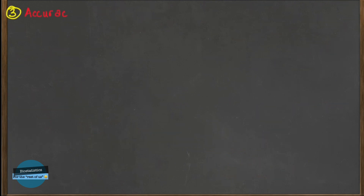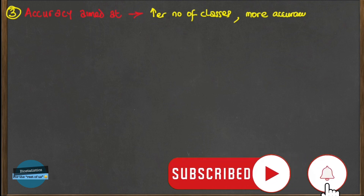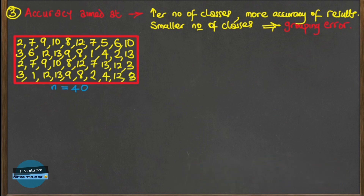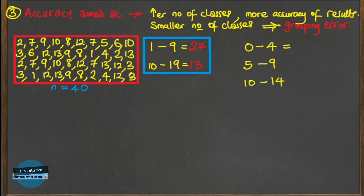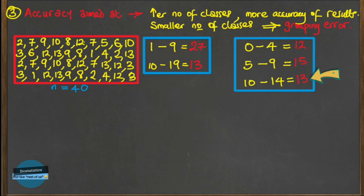The third factor is the accuracy you are aiming for in your results. Generally, as the number of classes increases, the accuracy of the results improves, at least to a certain extent. Consider data from 14 individuals grouped first into two groups and then three groups. With just two groups, many data points crowd into the first group — 27 out of 40. But with three groups, the data points even out: 12, 15, and 13.